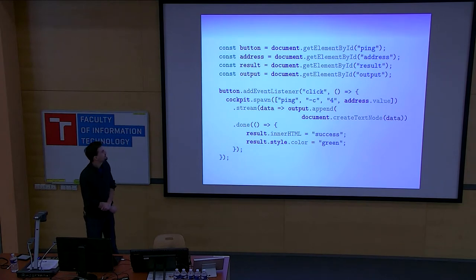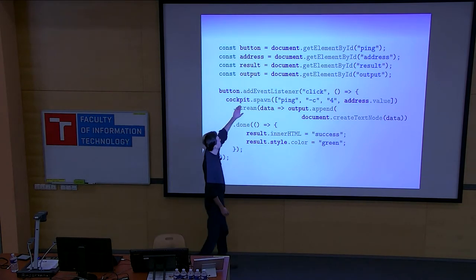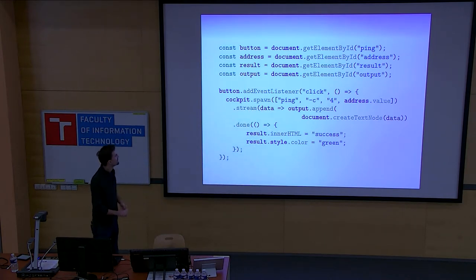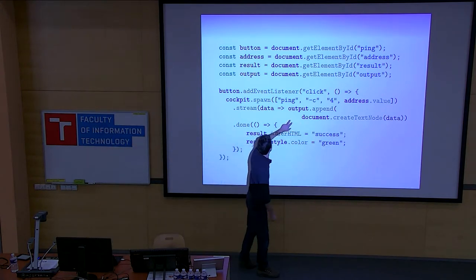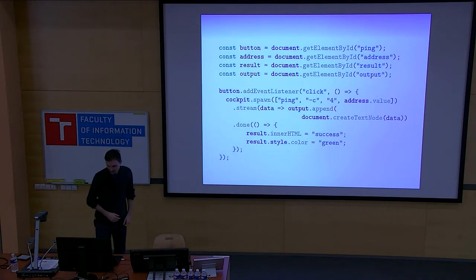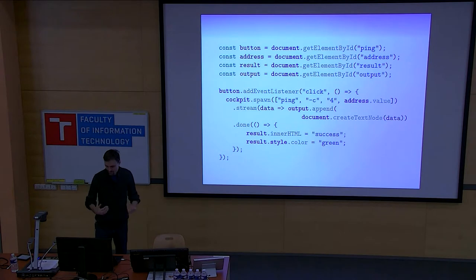We can wire this to the Cockpit API. This is the interesting bit here. We can use cockpit.spawn to run a program, and whenever something happens in standard out we can output it to our streaming element. And whenever the process finishes then we set the status field. Of course this is a simple file so the error handling case is missing, but this is the gist of it.